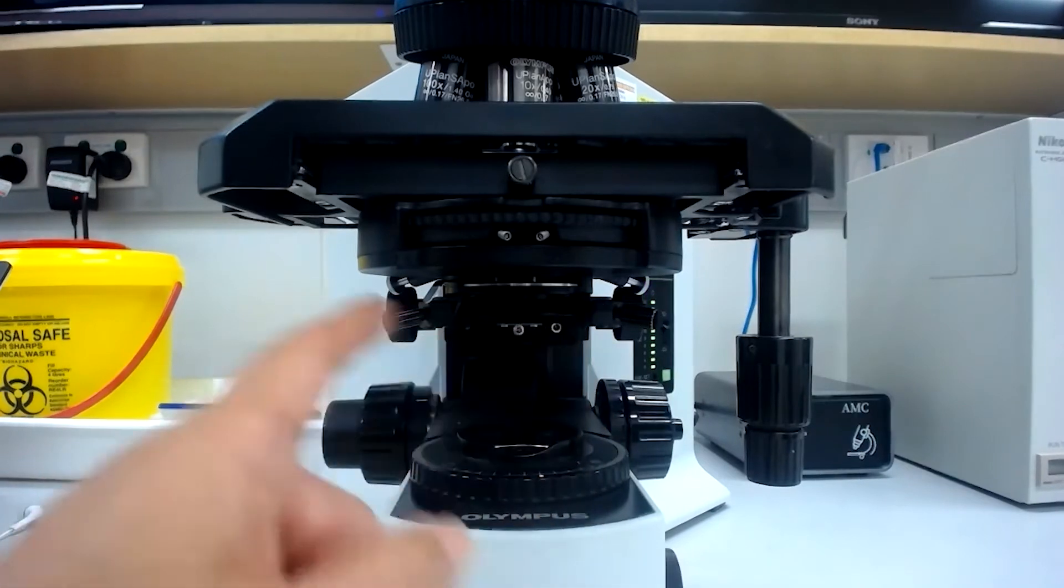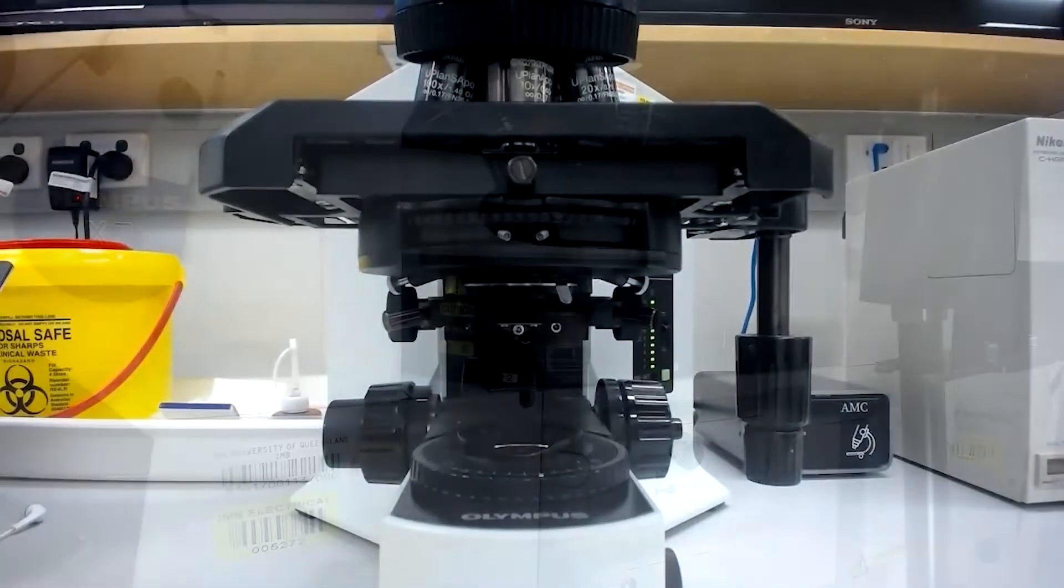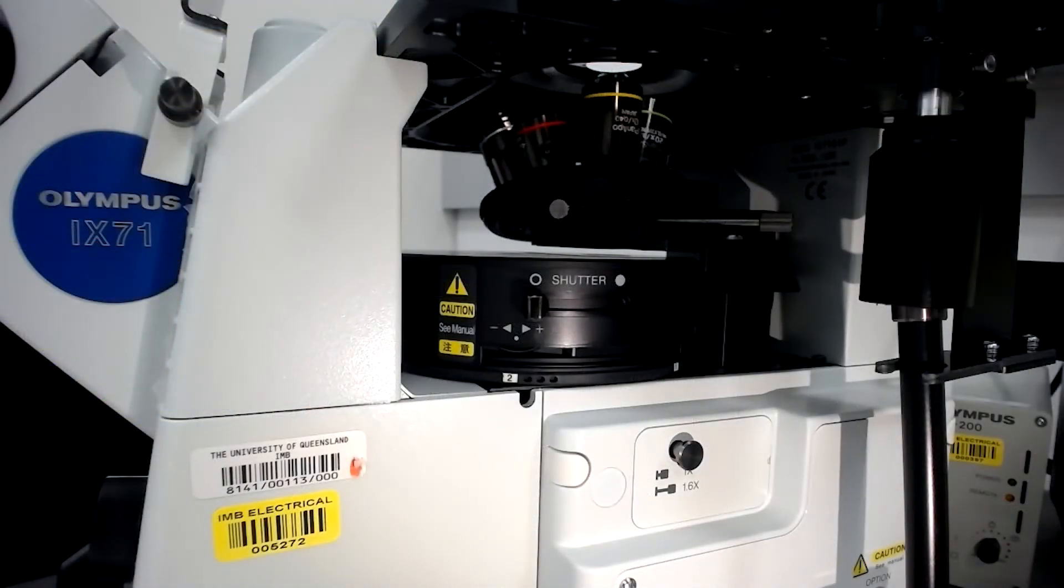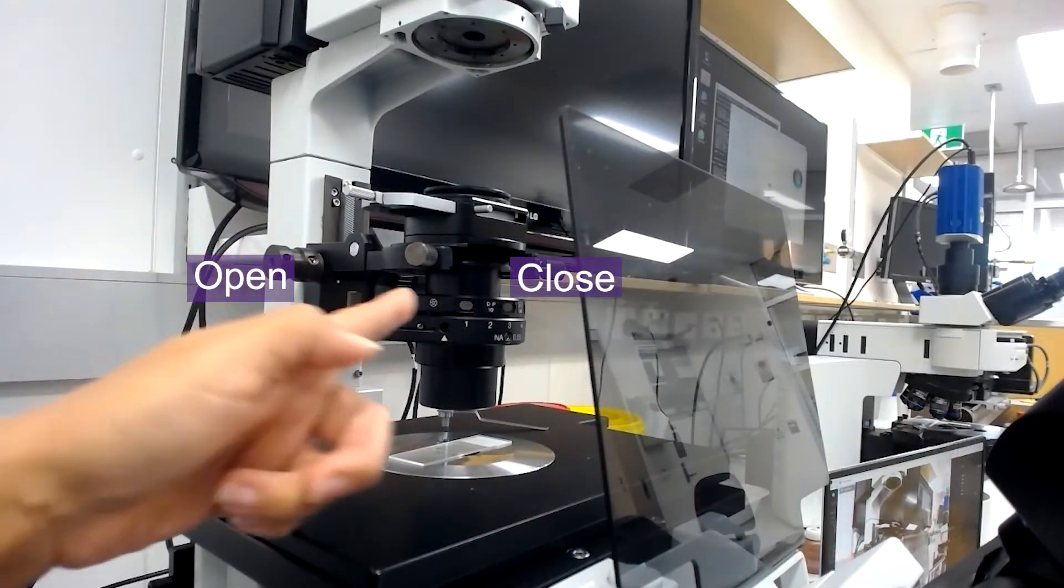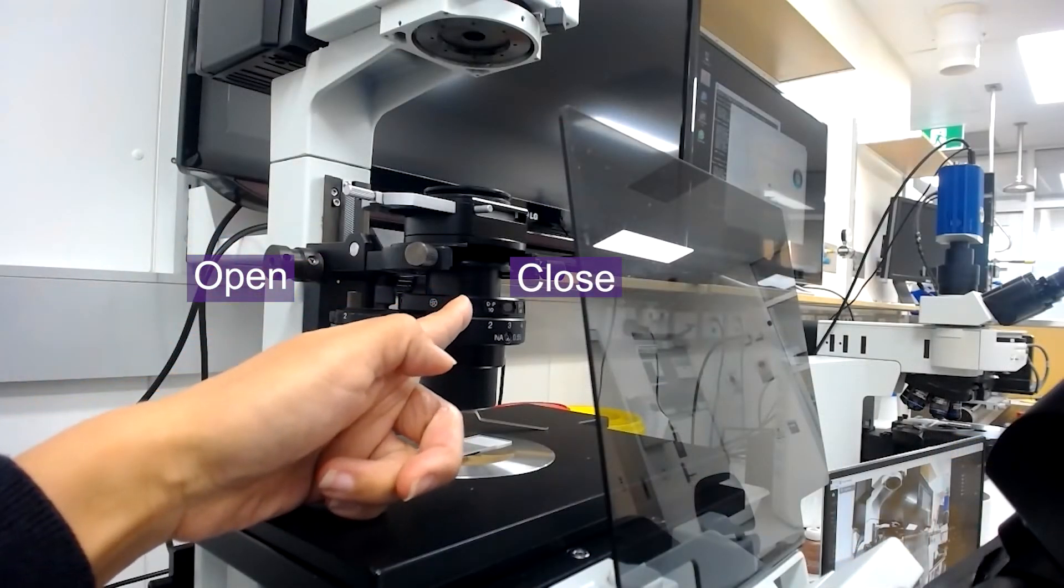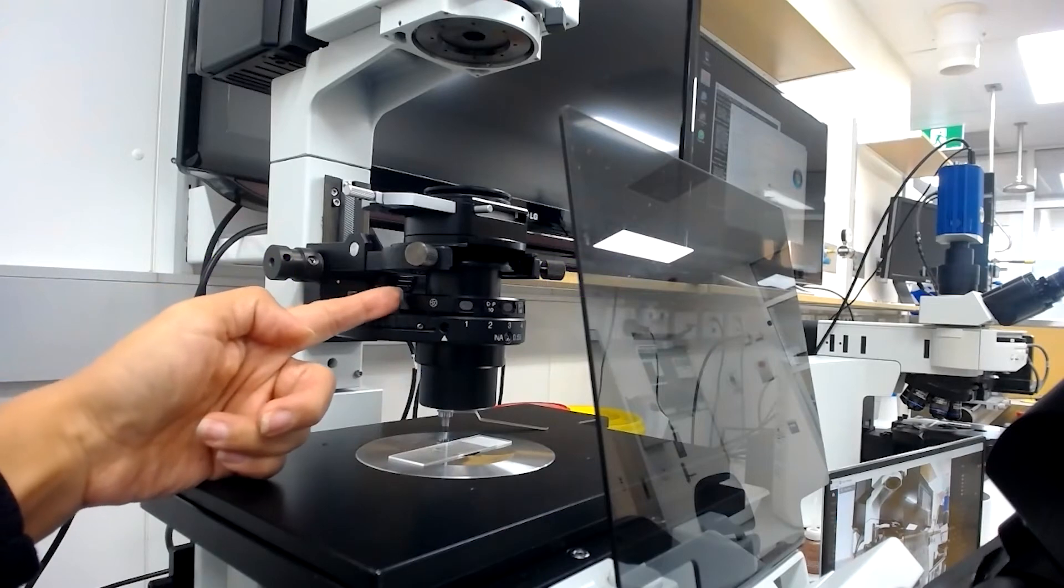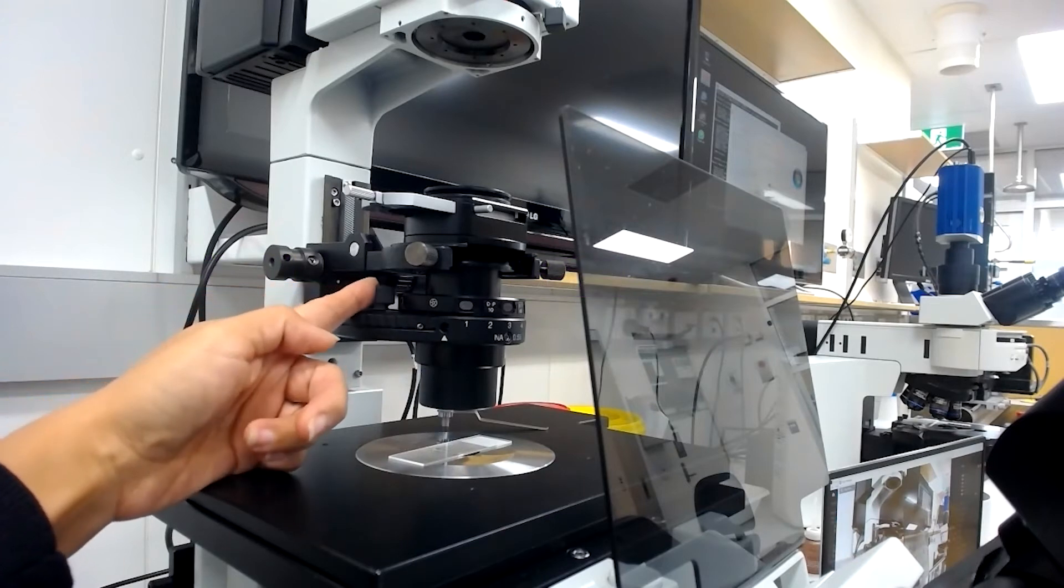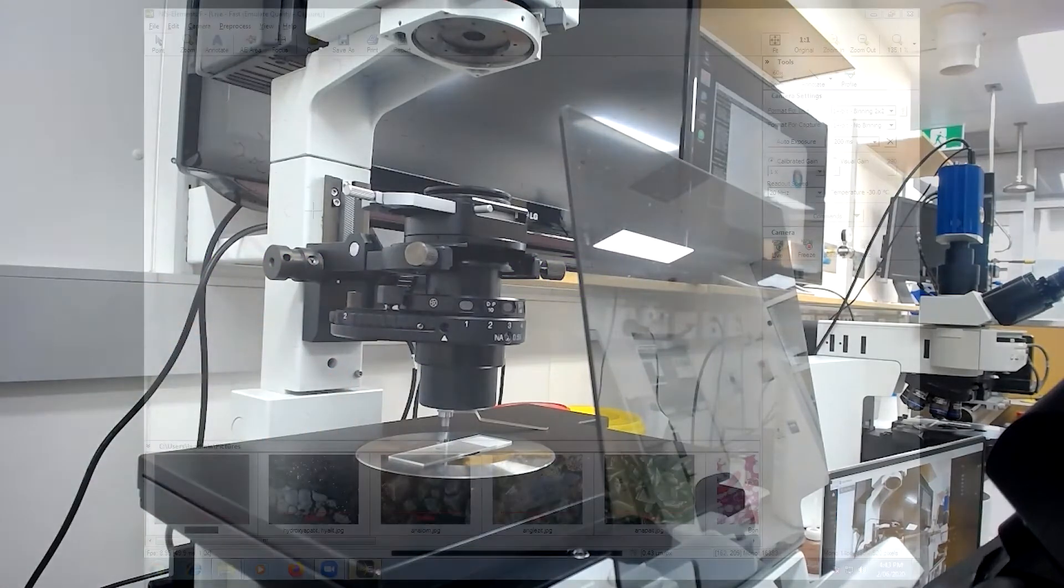For example, many 10x objectives have an NA of around 0.4, so three quarters of 0.4 is around 0.3 or 30 percent. Therefore, set the aperture stop to about 30 percent of fully open.